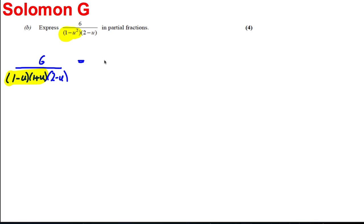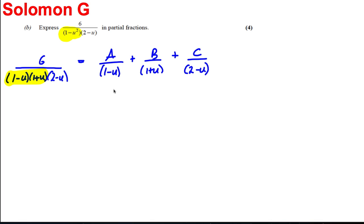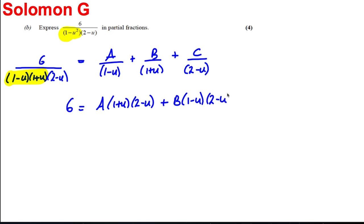With three distinct linear factors, we write: 6 over (1−u)(1+u)(2−u) equals A over (1−u) plus B over (1+u) plus C over (2−u). Our next line is therefore that 6 must equal A(1+u)(2−u) plus B(1−u)(2−u) plus C(1−u)(1+u).